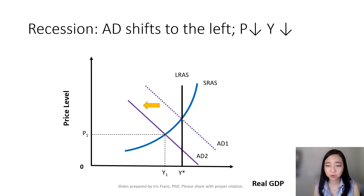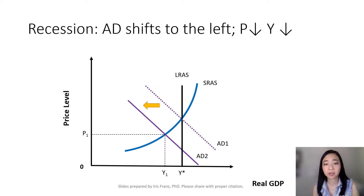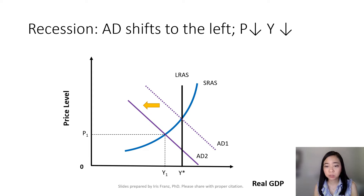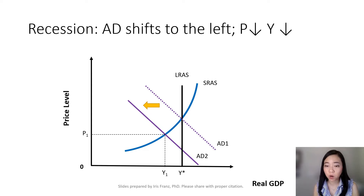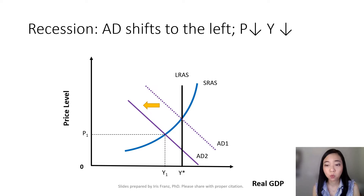Here is a graphical analysis of a recession. During a recession, the aggregate demand curve shifts to the left from AD1 to AD2. As a result, price level goes down and real GDP goes down as well. Your new GDP is Y1, which is lower than our potential GDP Y-star. That means in our economy we have cyclical unemployment.